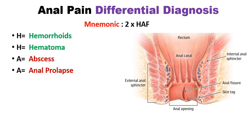The last letter is F. The first F stands for fistula — if a perianal fistula occurs, it can also cause anal pain. The second F stands for fissures — if an anal fissure occurs, it causes severe pain in the anus. This covers all the differential diagnoses of anal pain.